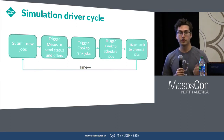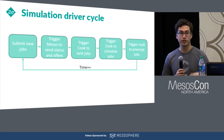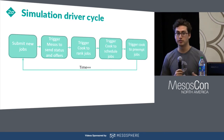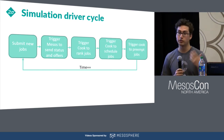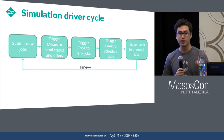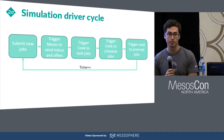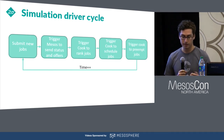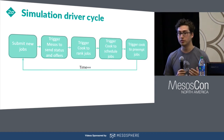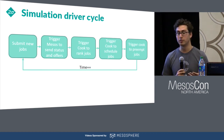On each cycle, the driver first submits new jobs. It triggers our mock of Mesos to send new offers and send status updates. It triggers Cook to rank, triggers Cook to schedule, triggers Cook to rebalance. And between each of these stages, it's incrementing simulation time.